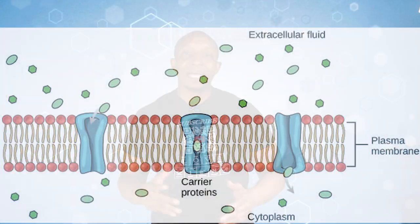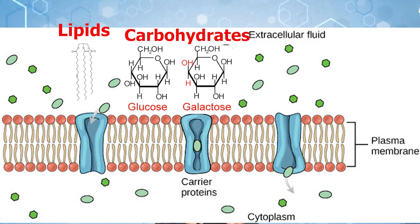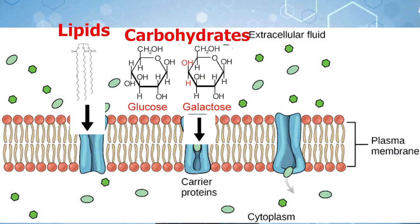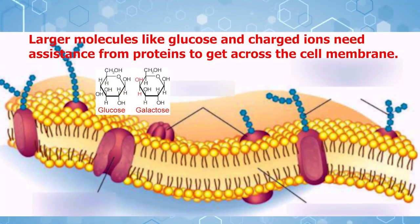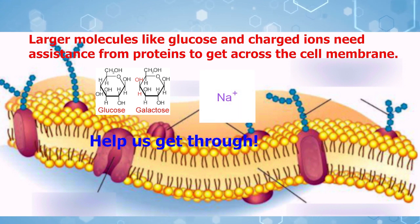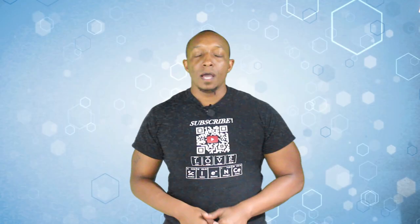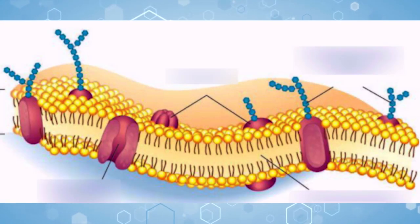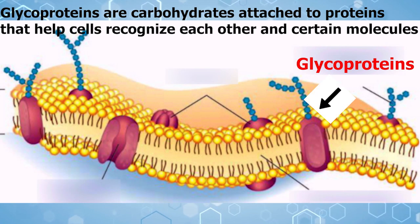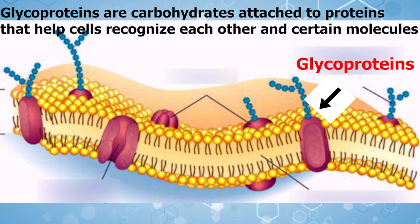Large molecules like lipids or carbohydrates use proteins to help move across cell membranes as well. It is important to know that larger molecules like glucose and charged molecules like ions cannot simply pass through the phospholipid bilayer — they must get assistance in order to pass. Lastly, some membrane proteins have carbohydrate chains called glycoproteins attached, to help cells recognize each other and certain molecules.